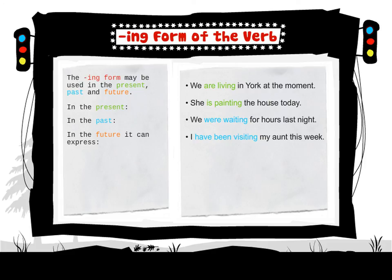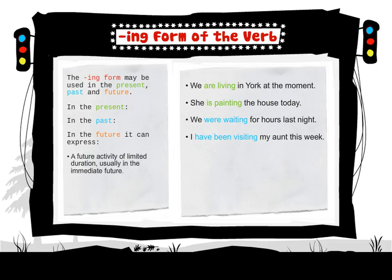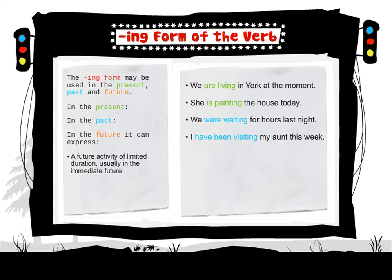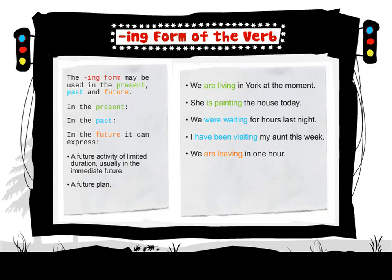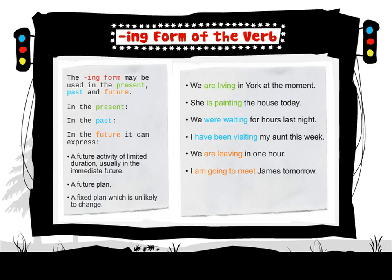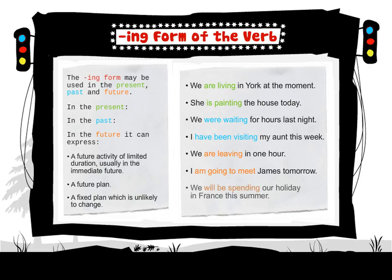In the future, the ING form can express a future activity of limited duration, usually in the immediate future: 'We are leaving in one hour.' It can also express a future plan: 'I am going to meet James tomorrow.' Or a fixed plan which is unlikely to change: 'We will be spending our holiday in France this summer.'